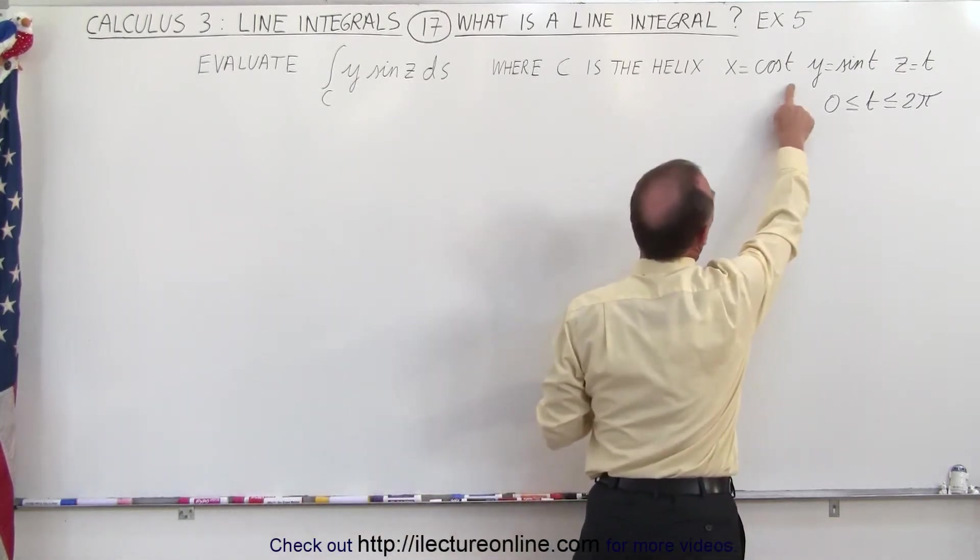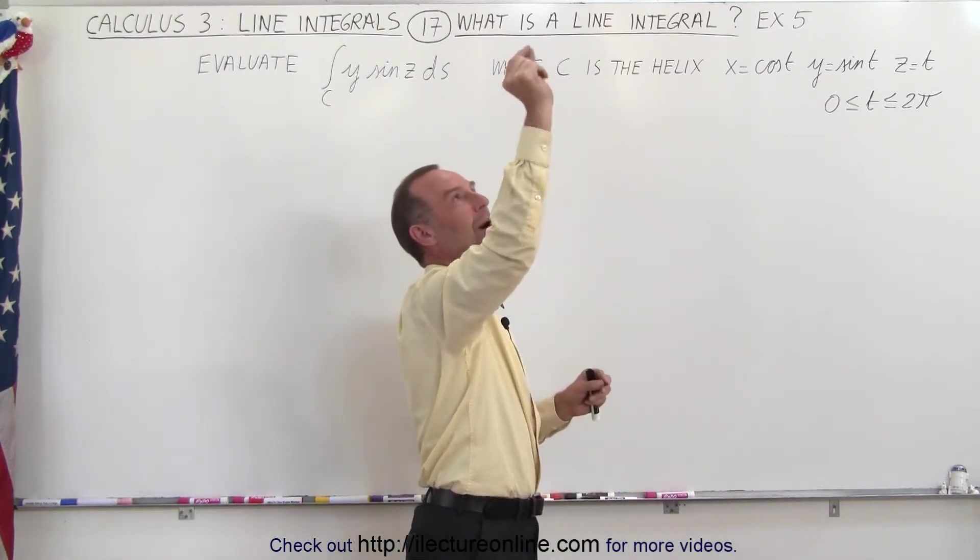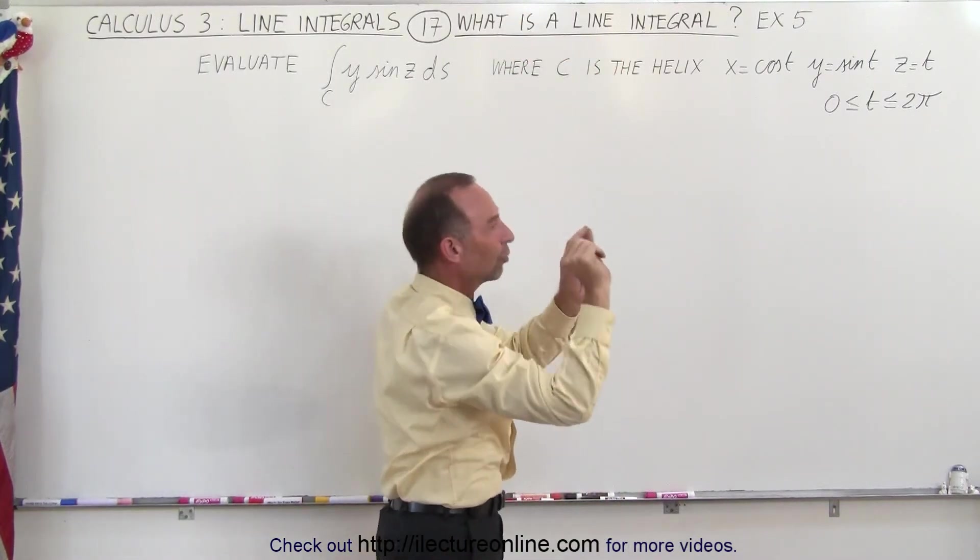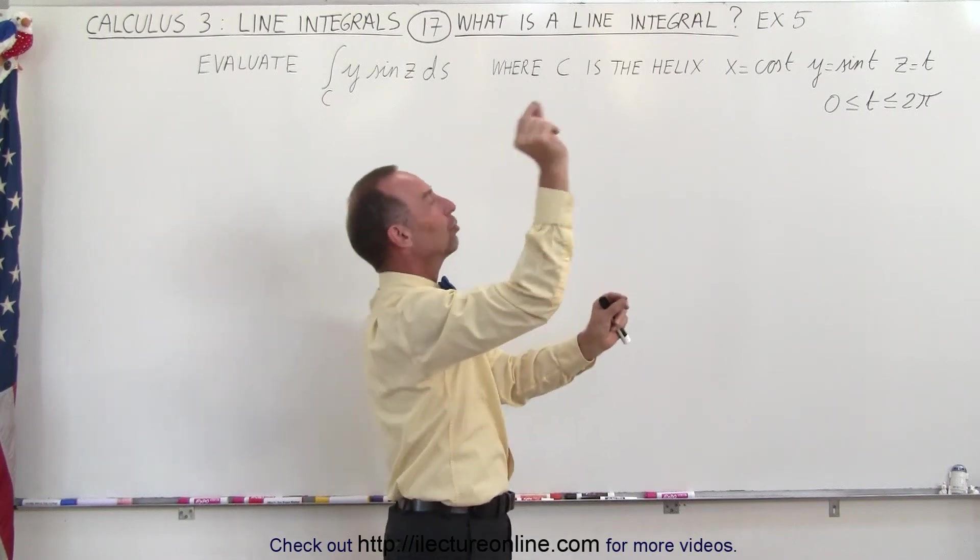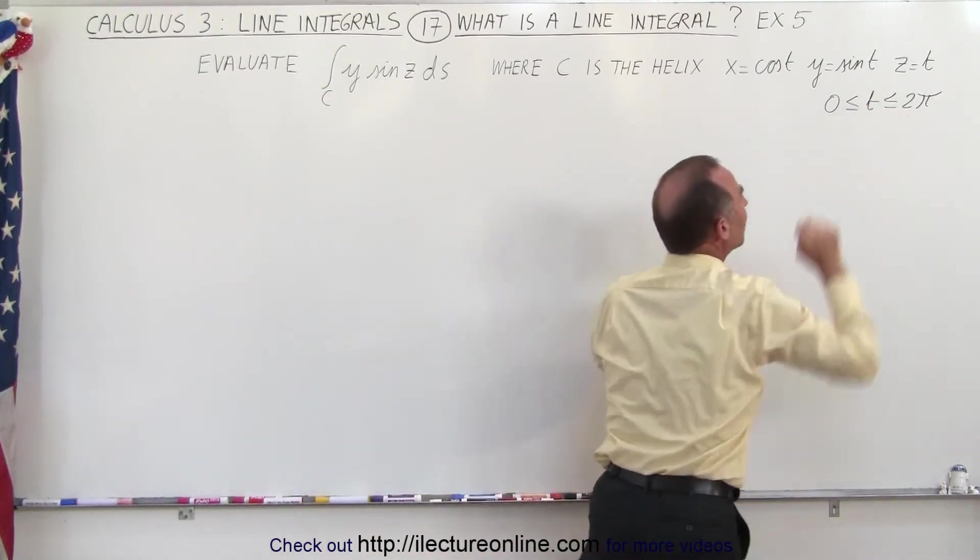And since x and y are functions of the cosine and the sine, basically we have a spiral or a helix that goes upward. It makes one complete turn, and as it makes one complete turn, it gains a height of z equals 2π.